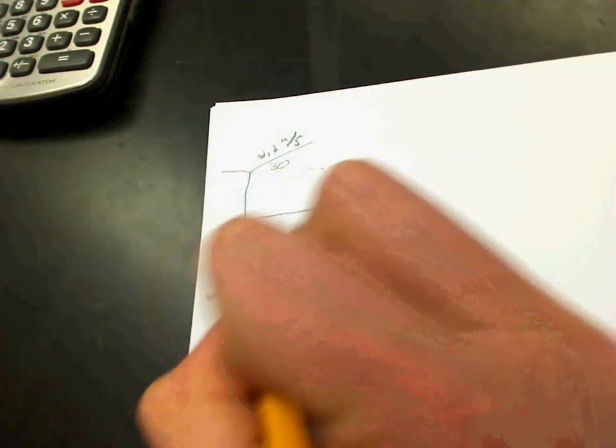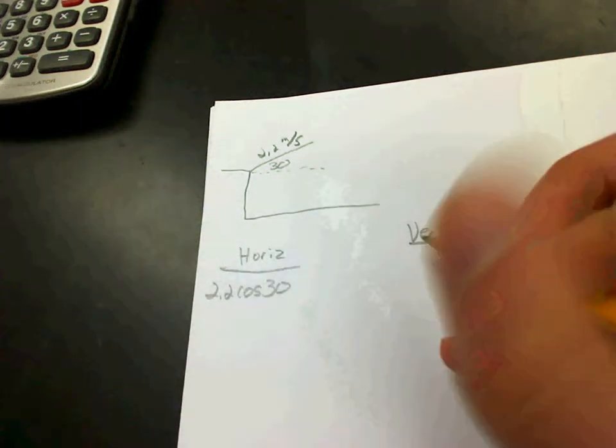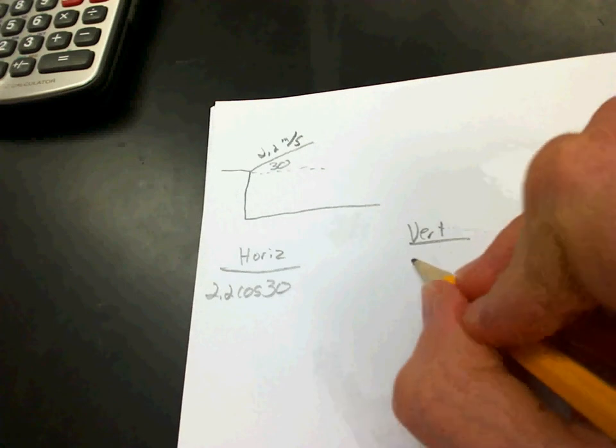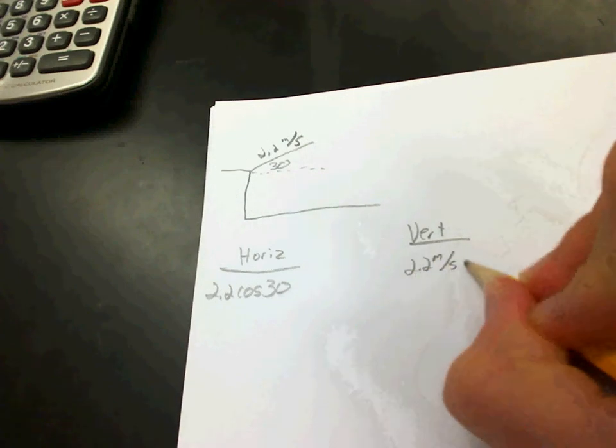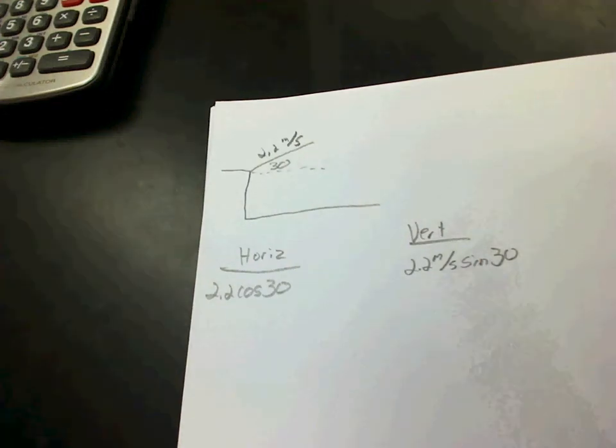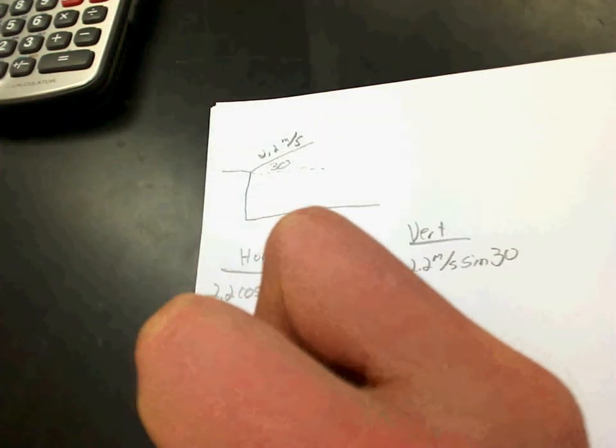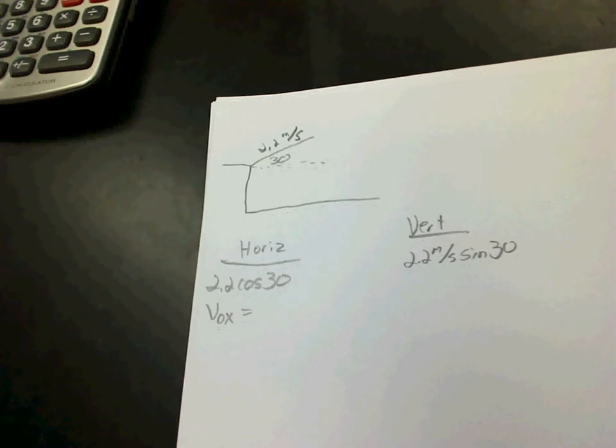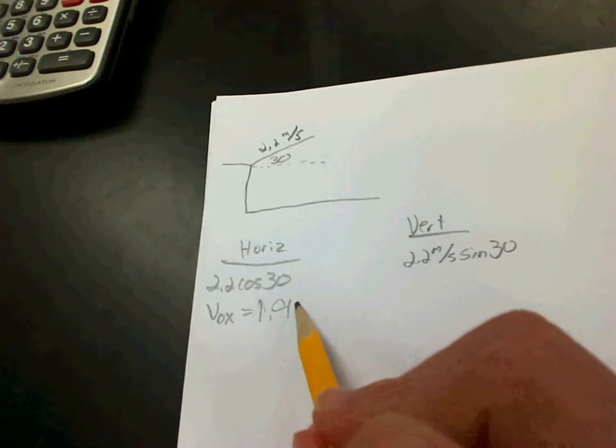As you might know, hopefully by this point in time, just set it up. Horizontal is the cosine of the angle times your hypotenuse, and vertical is your hypotenuse once more. Throw each of these into your calculator, and what you get is the initial velocity in your horizontal direction. And that gives you 1.9 meters per second.